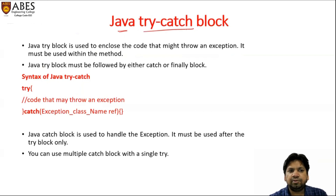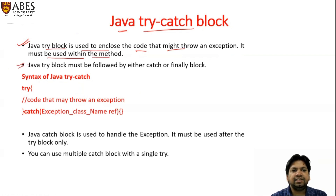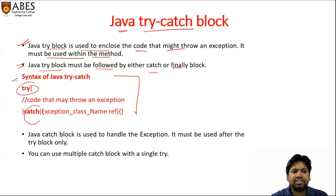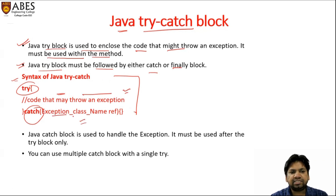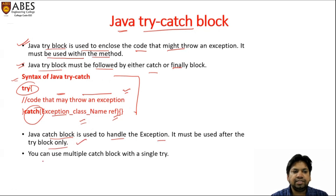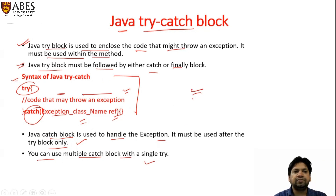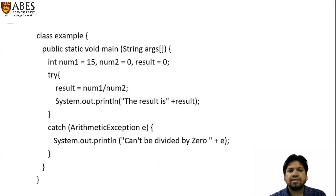This is the Java try-catch block. The Java try block is used to enclose the code that might throw an exception. It must be used within a method. The Java try block must be followed by either a catch block or a finally block. The syntax is: try block followed by catch, where between the braces you write the code that may throw an exception, and in catch you write the exception class name and a reference. Java catch block is used to handle the exception — it must be used after the try block only. You can use multiple catch blocks within a single try.